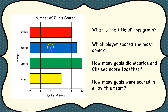Let's take a look and answer these questions. What is the title of this graph? Up here at the top where it should be: 'Number of Goals Scored.' Which player scored the most goals? Again, we're going to look for the biggest bar, and that happens to be the green one for Landon. Landon scored 10 goals because he has the longest bar.